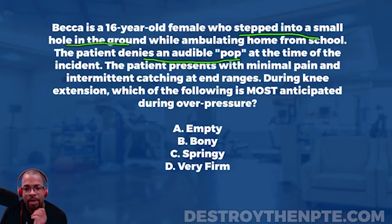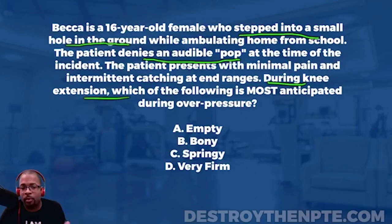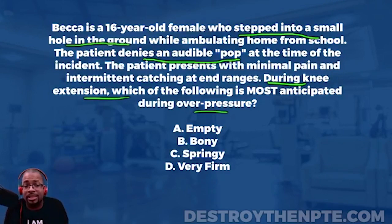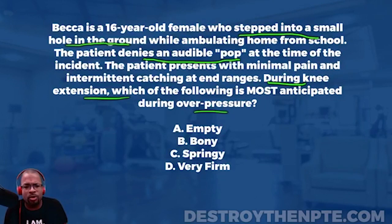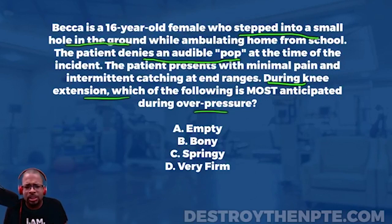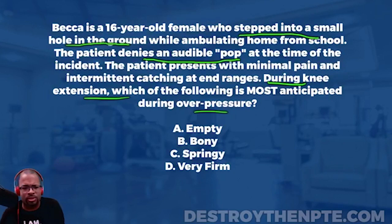During knee extension, which of the following is most anticipated during overpressure? I need to slow up here because some people get tripped up. When do we do overpressure? We do that during our examination process — specifically during passive range of motion. At the end of passive range of motion, we give that extra little push and assess what we feel. That's what we call our end feel — we get that during overpressure.